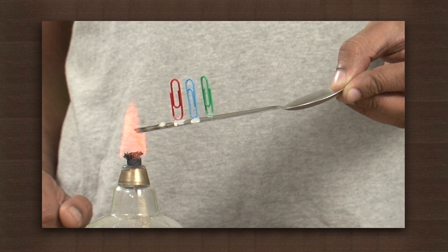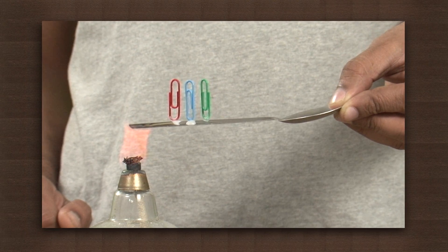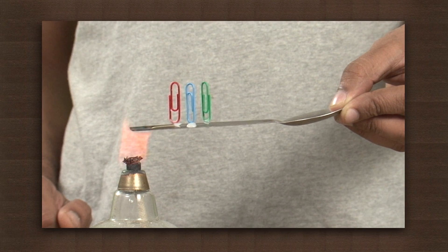We see that the pins start to drop from the wire one by one as the wax that stuck them to the metal spoon melts.